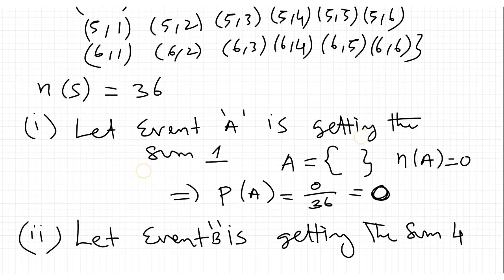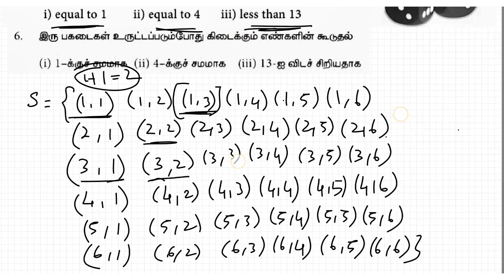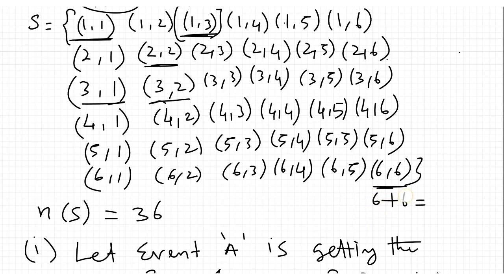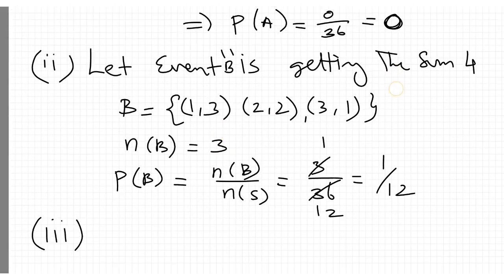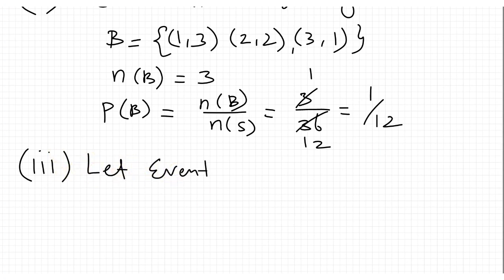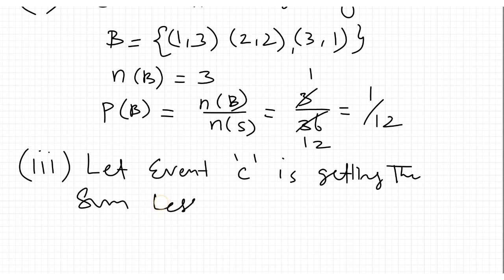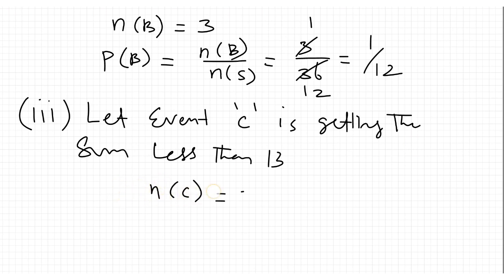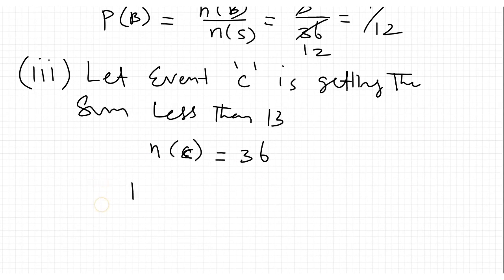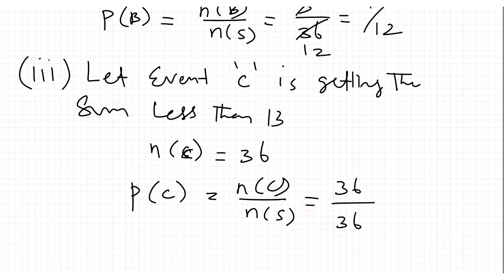Sub-question 3: sum is less than 13. The maximum sum is 6+6=12, which is less than 13. So all elements qualify. Let event C be getting the sum less than 13. n(C) = 36. P(C) = n(C)/n(S) = 36/36 = 1.